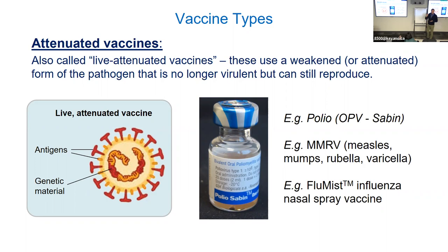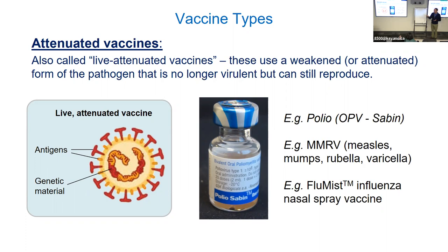This has advantages because the attenuated organism will replicate and in some cases stimulate immunity for years, giving a long-lived immunity. Examples include the oral polio vaccine (OPV, also called the Sabin vaccine), MMRV — mumps, measles, rubella, varicella — which are all in one shot, and the flu mist, which was an attenuated nasal spray offered as an alternative flu shot especially for children. This attenuated strategy was also used by China for their COVID-19 vaccine.